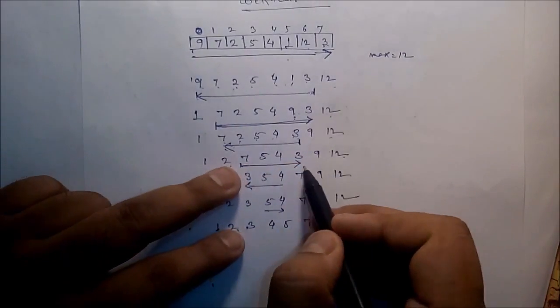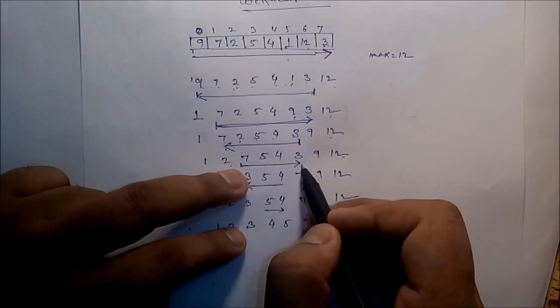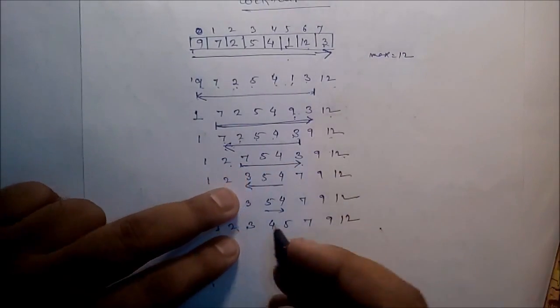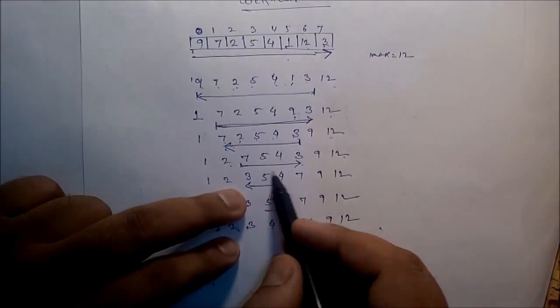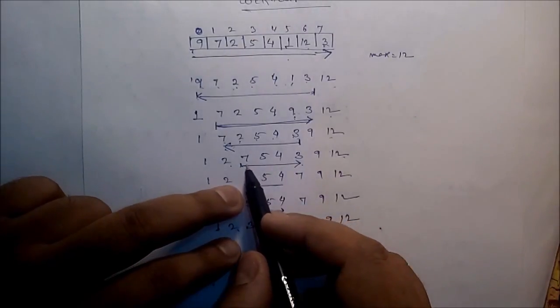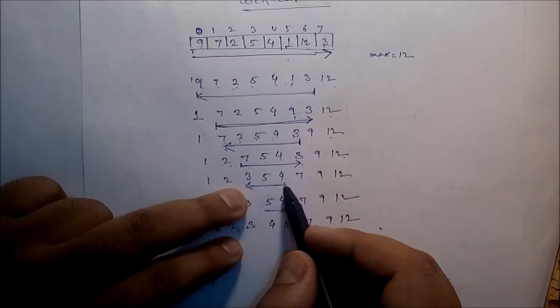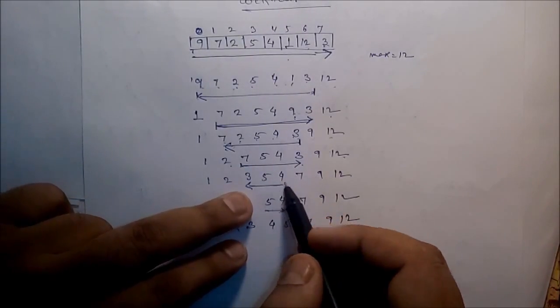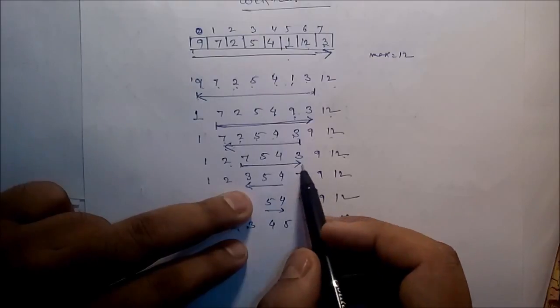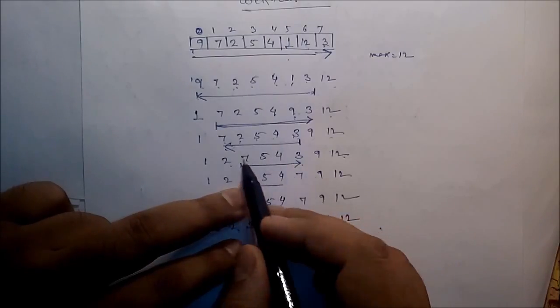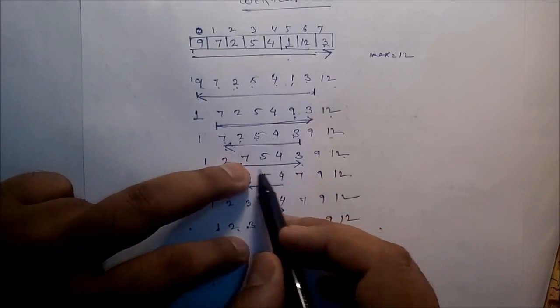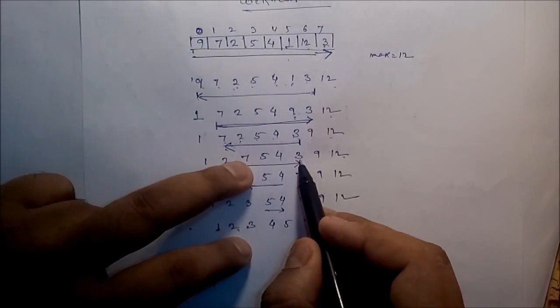Now from the remaining unsorted part — seven, five, four, three — check and identify the maximum value. The maximum is seven, so swap accordingly.